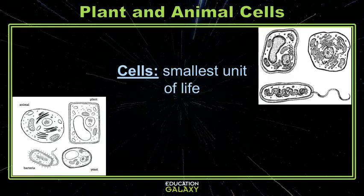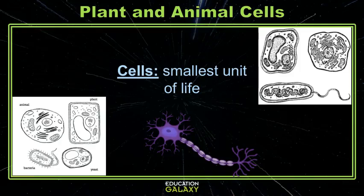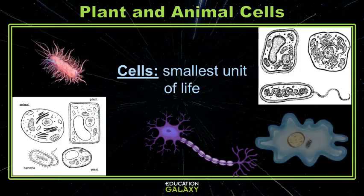Cells are the smallest unit of life, and all living things are made up of some number of cells. After a lot more observation, scientists noticed that not all cells are the same. Some are larger, some have different parts on the inside, some organisms are only made up of one cell, while others are made up of a lot.